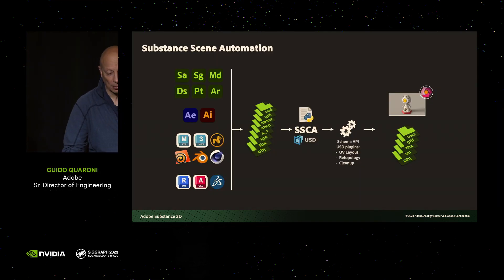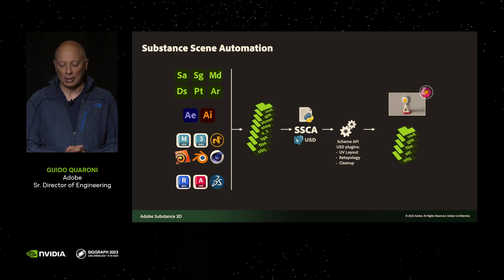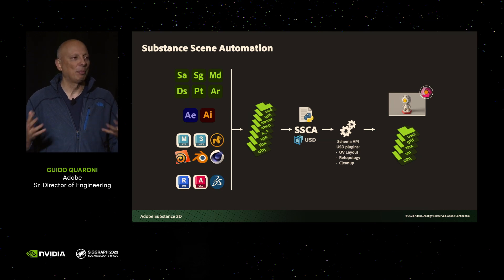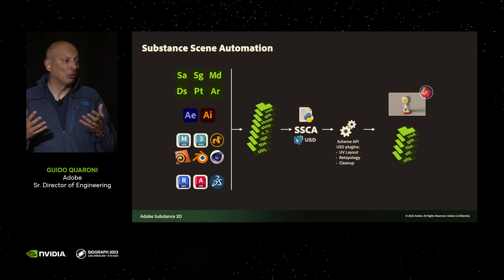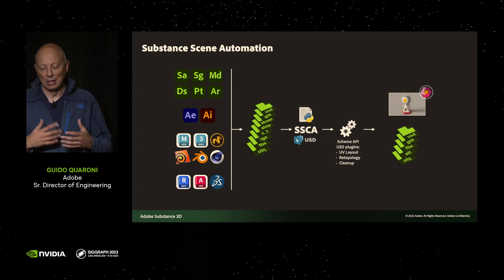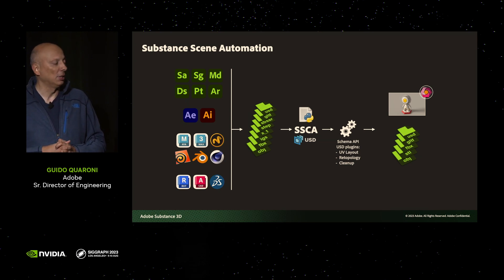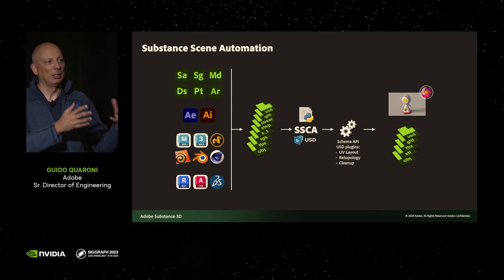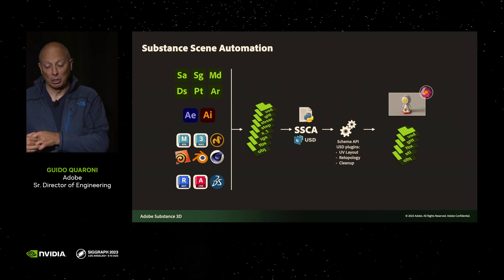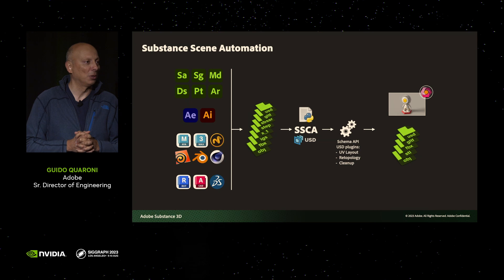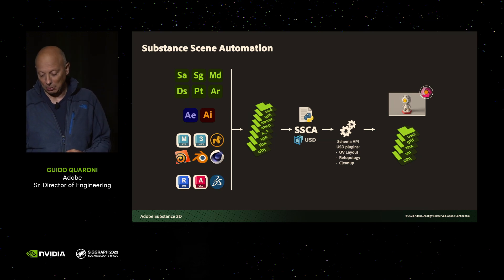So starting with Substance Scene Automation — this is a fairly new product, currently in beta, working with a few enterprises. It's an engine with no user interface. The idea is: if you want to process 3D data coming from CAD products or other third-party products, you can run Python scripts to change the scene, add things, remove things, compute UV layout, do retopology. We wanted to offer this kind of low-level headless infrastructure where you can take 3D assets, process them, optimize them, and then produce a render or generate a new output. This will be extremely valuable for the e-commerce space, where you have all sorts of assets and need to prepare them for web.